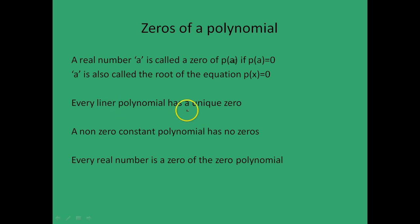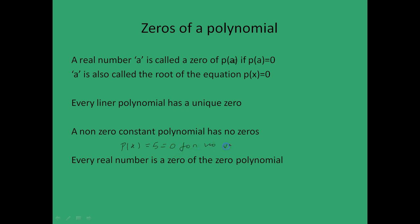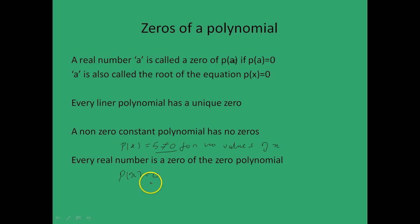Every linear polynomial has a unique zero. A non-zero constant polynomial has no zeros, which can be easily seen — for example, p(x) = 5 is equal to 0 for no values of x, because 5 can never be equal to 0. Also, every real number is a zero of the zero polynomial. The zero polynomial is given by p(x) = 0, and since this is an identity, it is true for every real number.